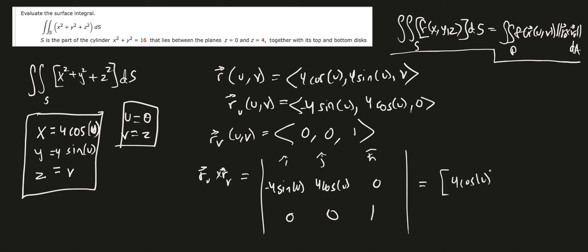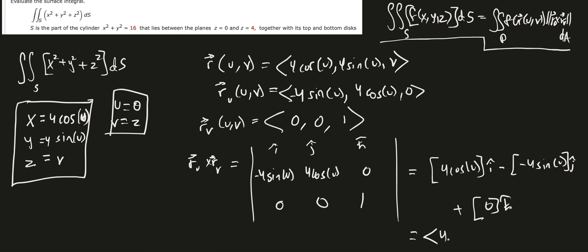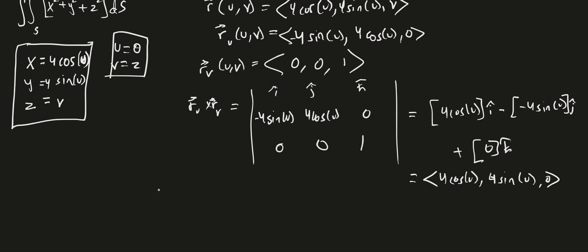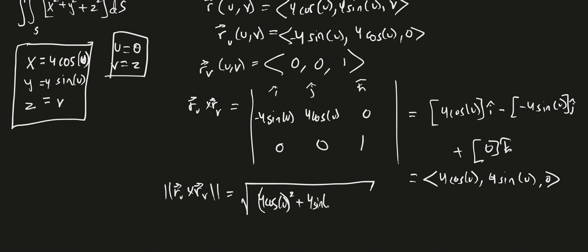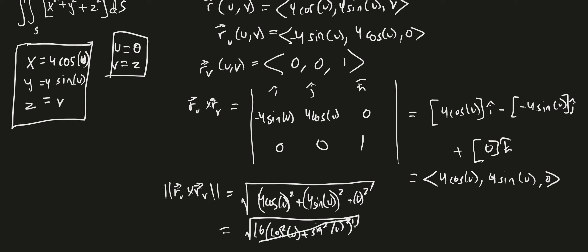Computing the cross product r_u × r_v using the determinant with i, j, k: we get (4 cosine u, 4 sine u, 0). The magnitude of this is the square root of 16 cosine squared u plus 16 sine squared u plus 0, which equals the square root of 16 times (cosine squared u plus sine squared u), which simplifies to 4.